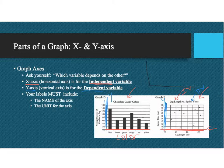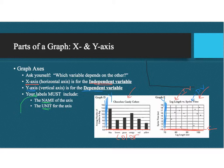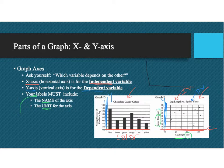Here is a huge thing you need to make sure you keep in mind — a lot of people forget this. Your labels must include the name of the axis and the unit. For example, in graph E, the name of the X axis is leg length and the unit is centimeters — you need both. For the Y axis, the name is sprint time and the unit is seconds.